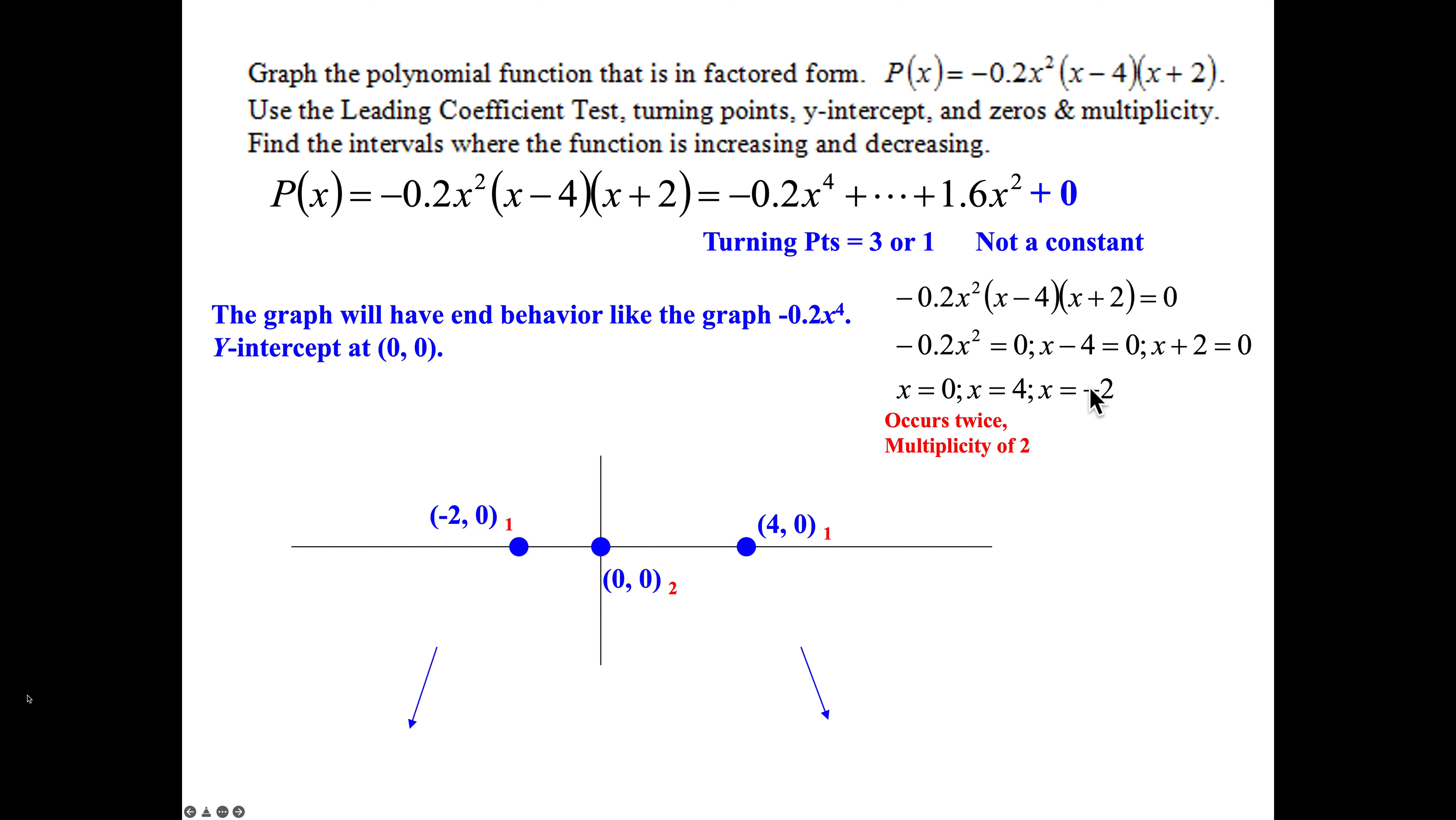So we can plot these points and understand my curve is going to come up, cross this x-intercept - it's a go-through. It's got to turn back down, hit this 0, but because it occurs twice, that's going to be a turning point. That's a touch and go. So one turning point, two turning points, we'll come back up and back down. There's your third turning point.